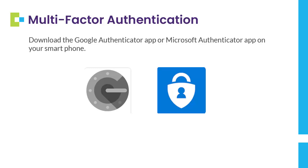Start by downloading the Google Authenticator app or Microsoft Authenticator app on your smartphone, or any other third-party authenticator app approved by your IT department. You can find these in the App Store on your phone and they are at no cost to you.